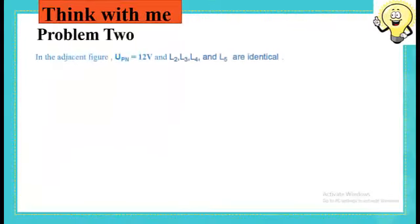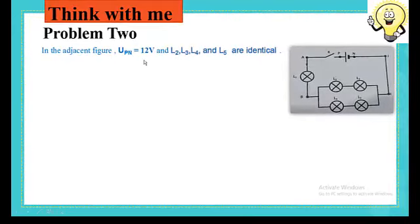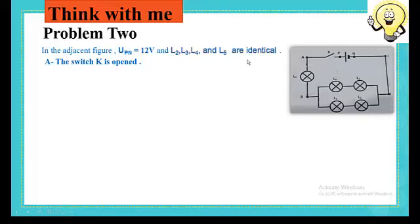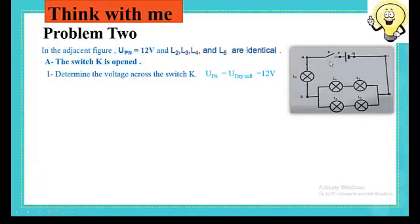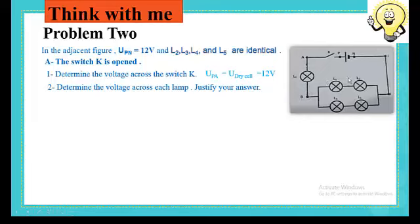Let's move to problem 2. There is a given and an electric circuit. Read the given and check the circuit. Starting with the first situation — switch K is open. You have to determine the voltage across the open switch K, which equals the generator voltage: 12 volts. Since the switch is open, this is an open circuit, there is no flow of current, and thus there is no potential difference or voltage across the terminals of the lamps.